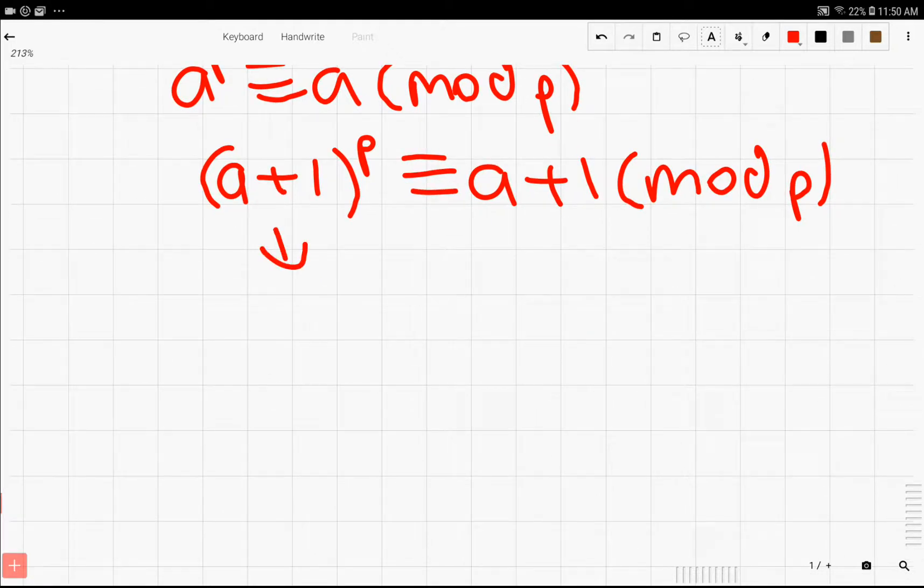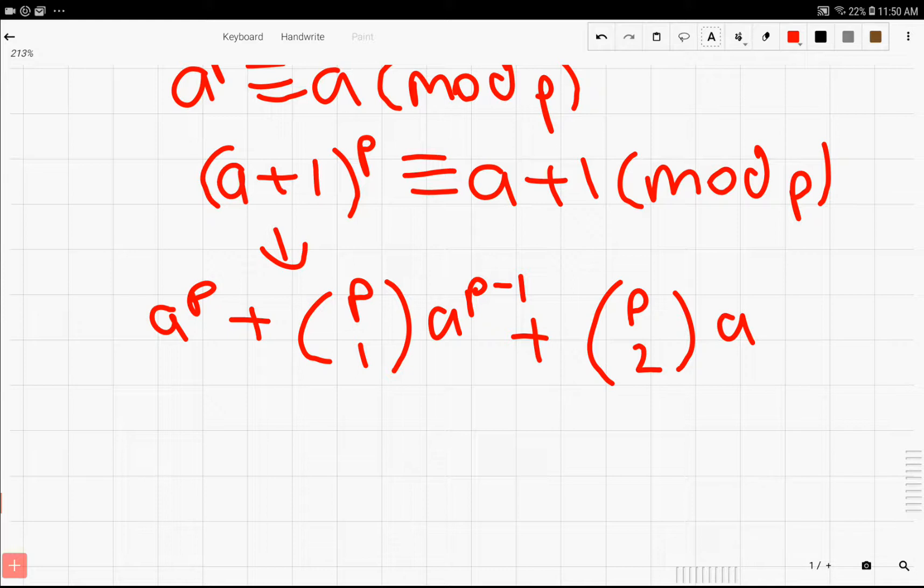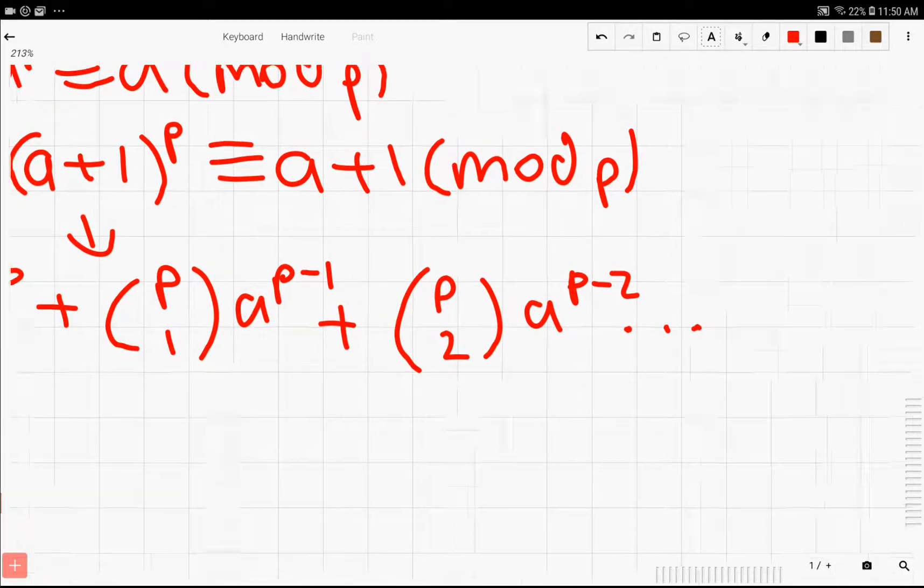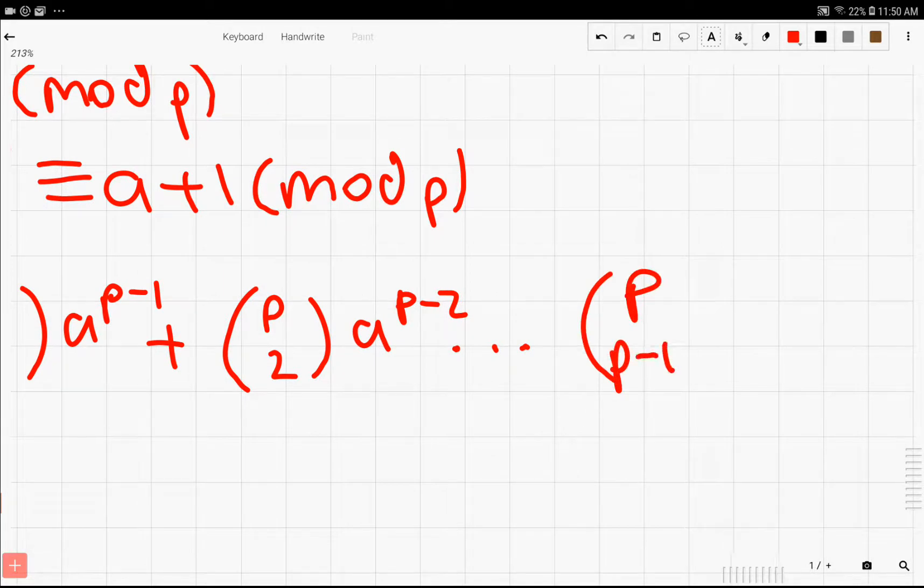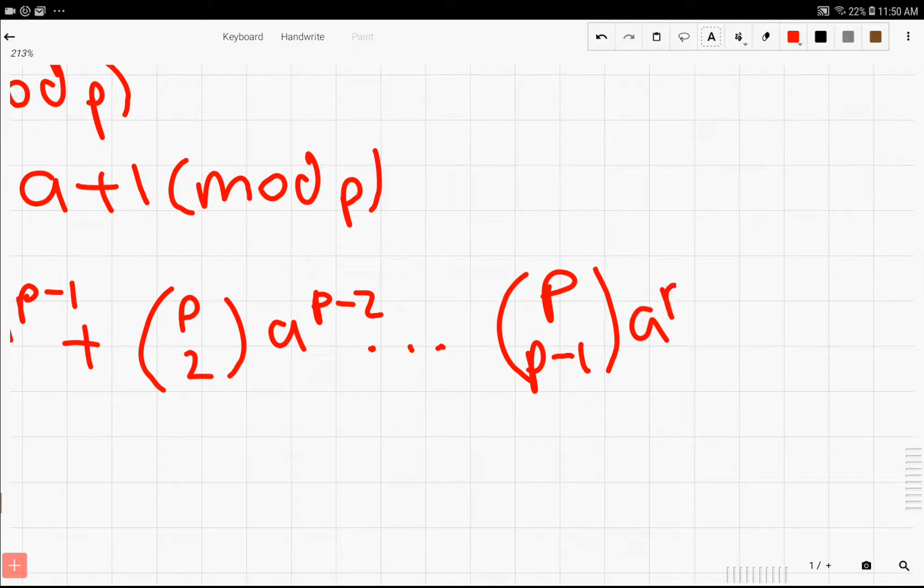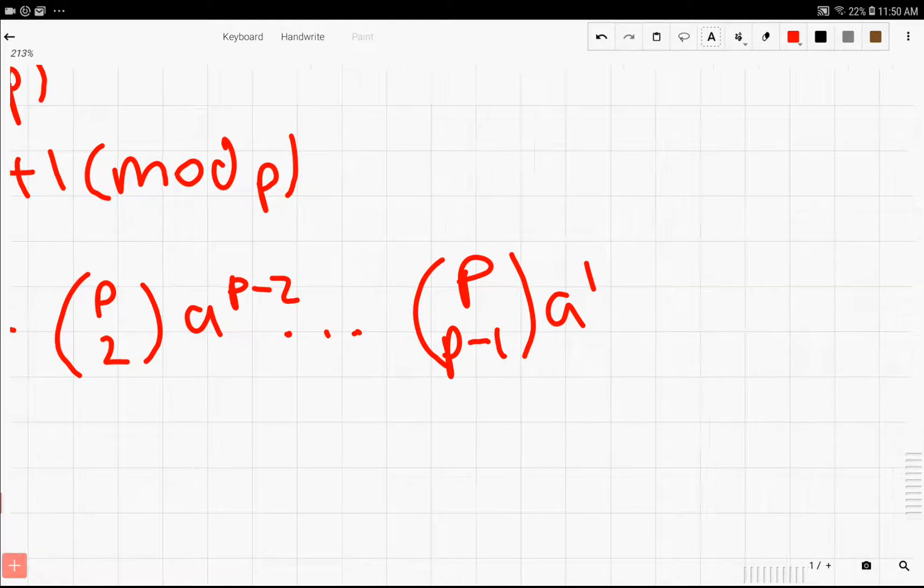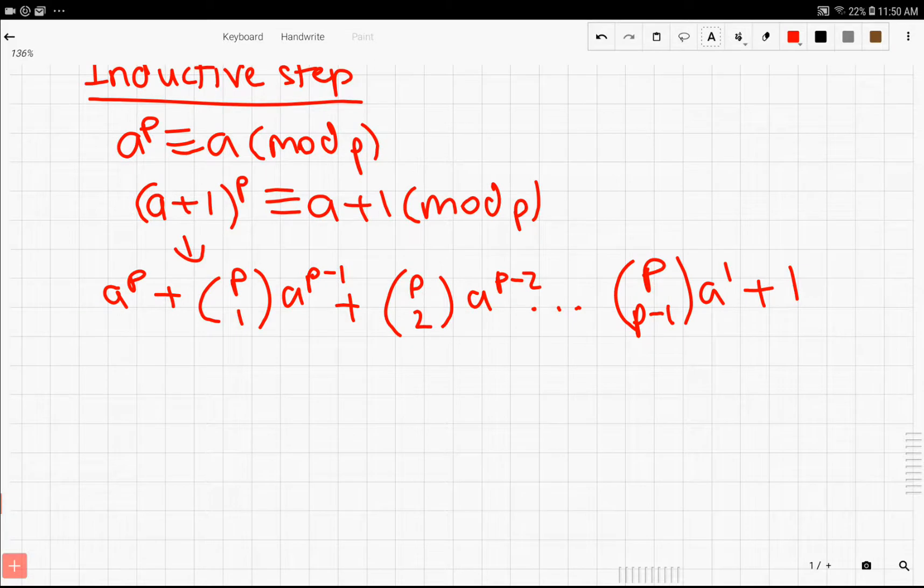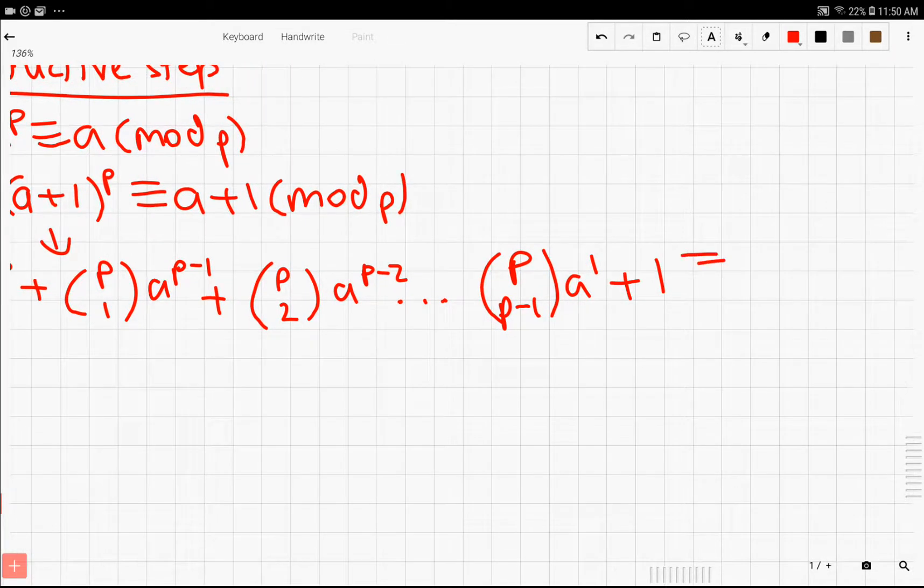We're going to expand this binomial using the binomial expansion method, which expands binomials to a certain power. This is extremely useful here because we just have (a+1) for the binomial. This means we have a^p + (p choose 1)a^(p-1) + (p choose 2)a^(p-2) and so on, all the way down to (p choose p-1)a^1, and lastly we have 1 as our constant. This is all mod p.